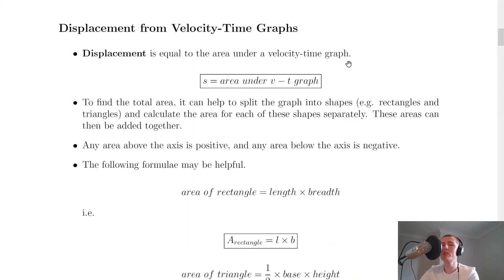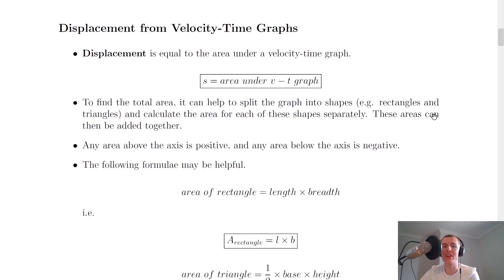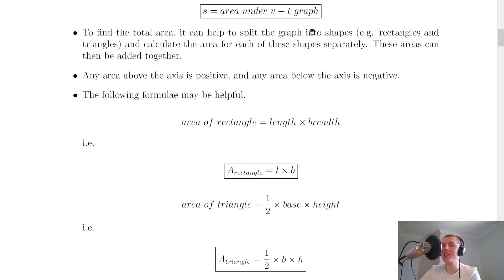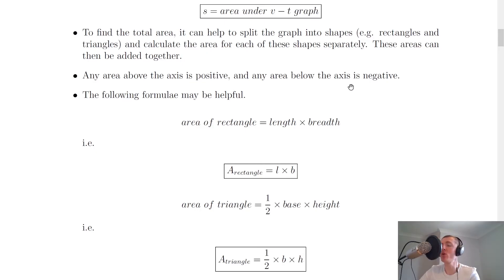Displacement is equal to the area under a velocity-time graph, so s equals the area under a VT graph. To find the total area it helps to split the graph into shapes — rectangles and triangles. You calculate the area for each shape separately and then add them together to get the total displacement. Any area above the axis will be positive and any area below the axis will be negative.